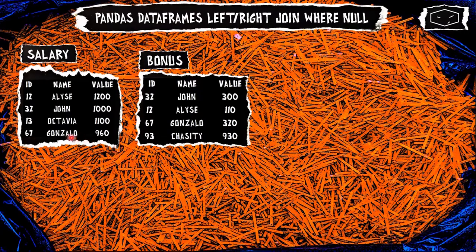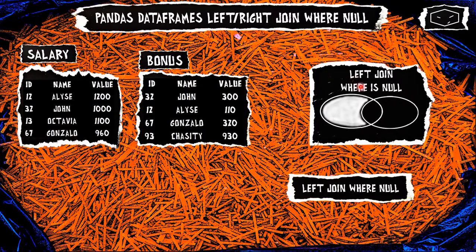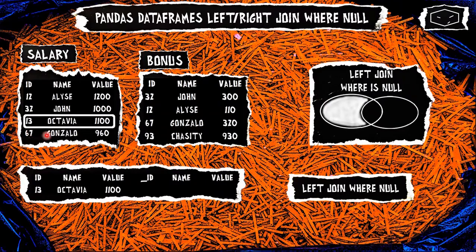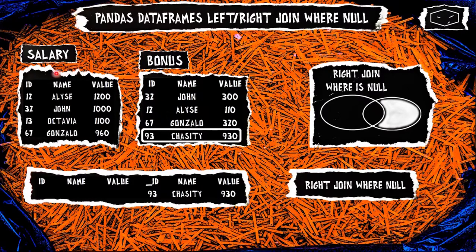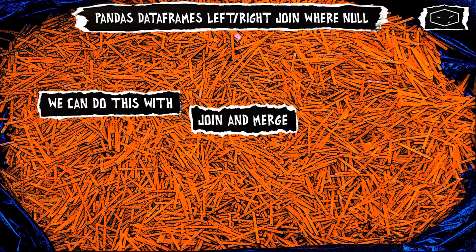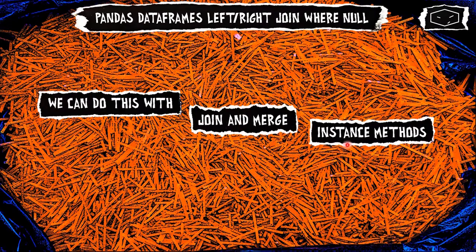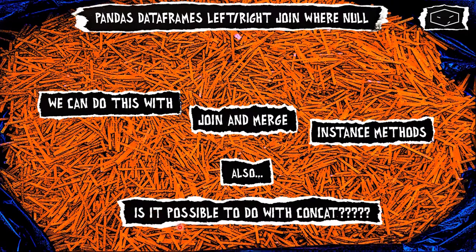Hello again. Here we will use the same data frames as the previous videos and we will do a left join where is null, which is usually represented like this and is nothing more than just selecting the rows from the left data frame that don't have a match in the right data frame. For right join where is null it is exactly the reverse. We can do this with the join and merge instance methods, and we will also see if it is possible to do it with the concat function.